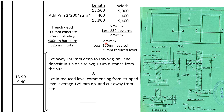Above the ground is 250 — from the top of the concrete to the ground level is 250. So we need to excavate to 775. We shall have already cleared the site of vegetable soil, which is 150 millimeters, so the remaining reduced level depth is 125 millimeters. We excavate in reduced level commencing from strip level, average 125 millimeters deep, and cut away from the site.